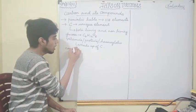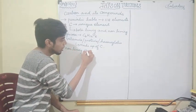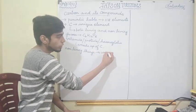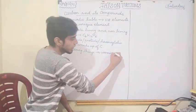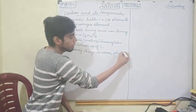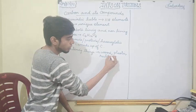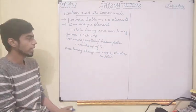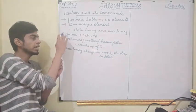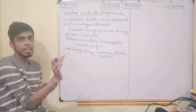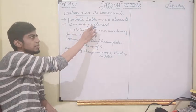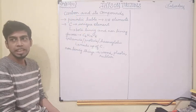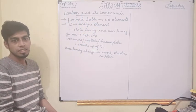Similarly, in non-living things also, carbon is present. For example, plastic is made up of carbon. Rubber is made up of carbon. Most non-living things are made up of carbon. So since carbon is present everywhere, it is considered a unique element and we have to study about it separately.